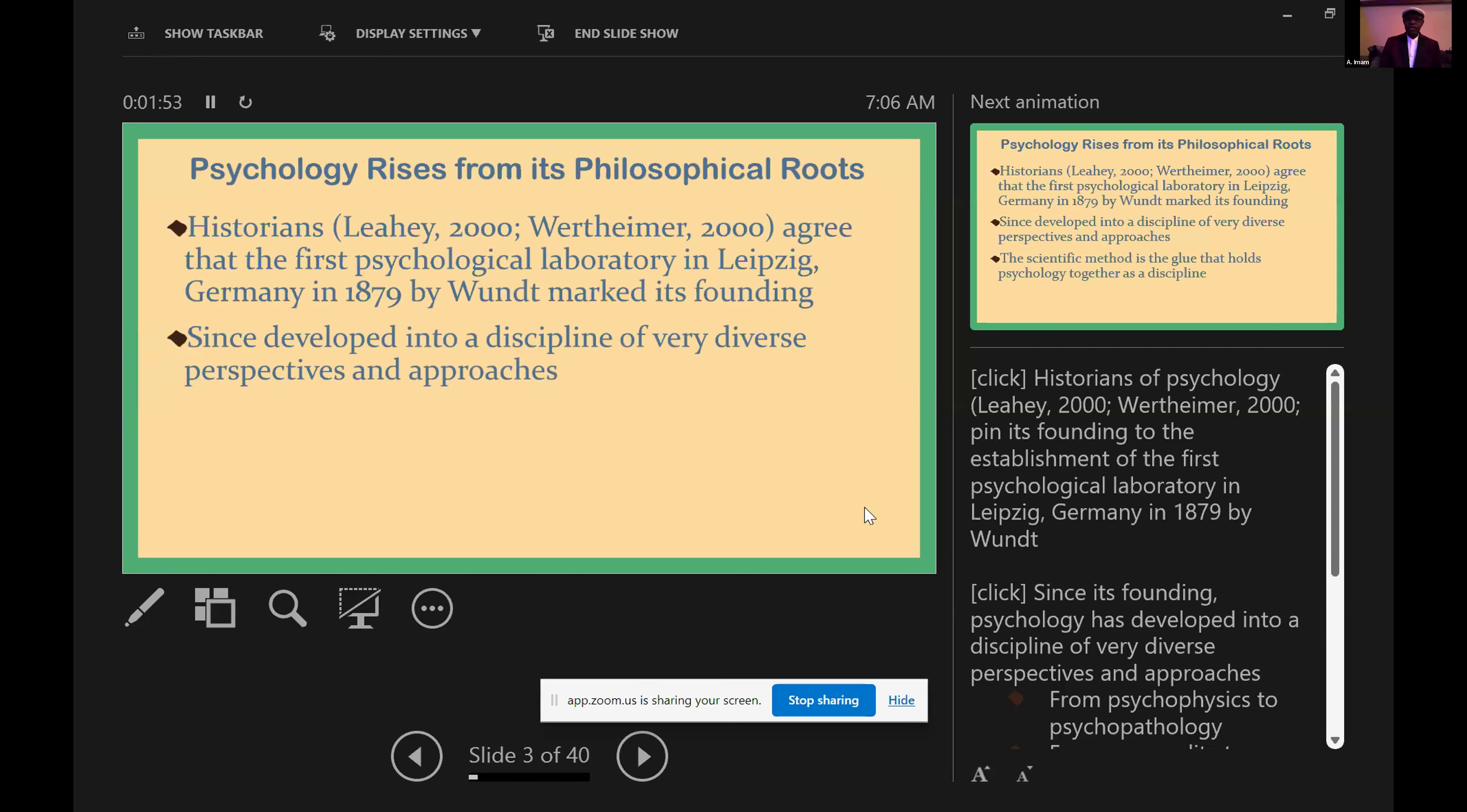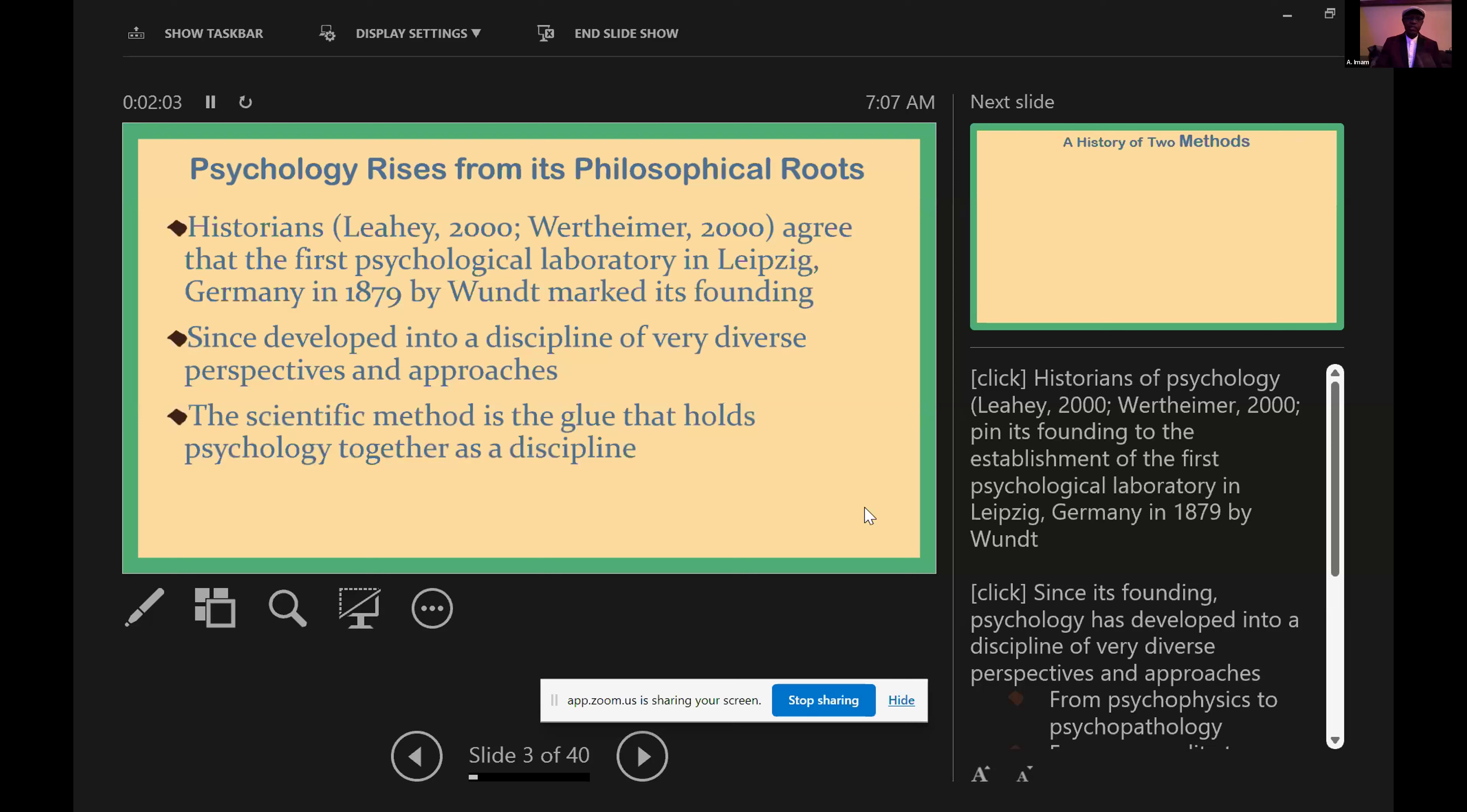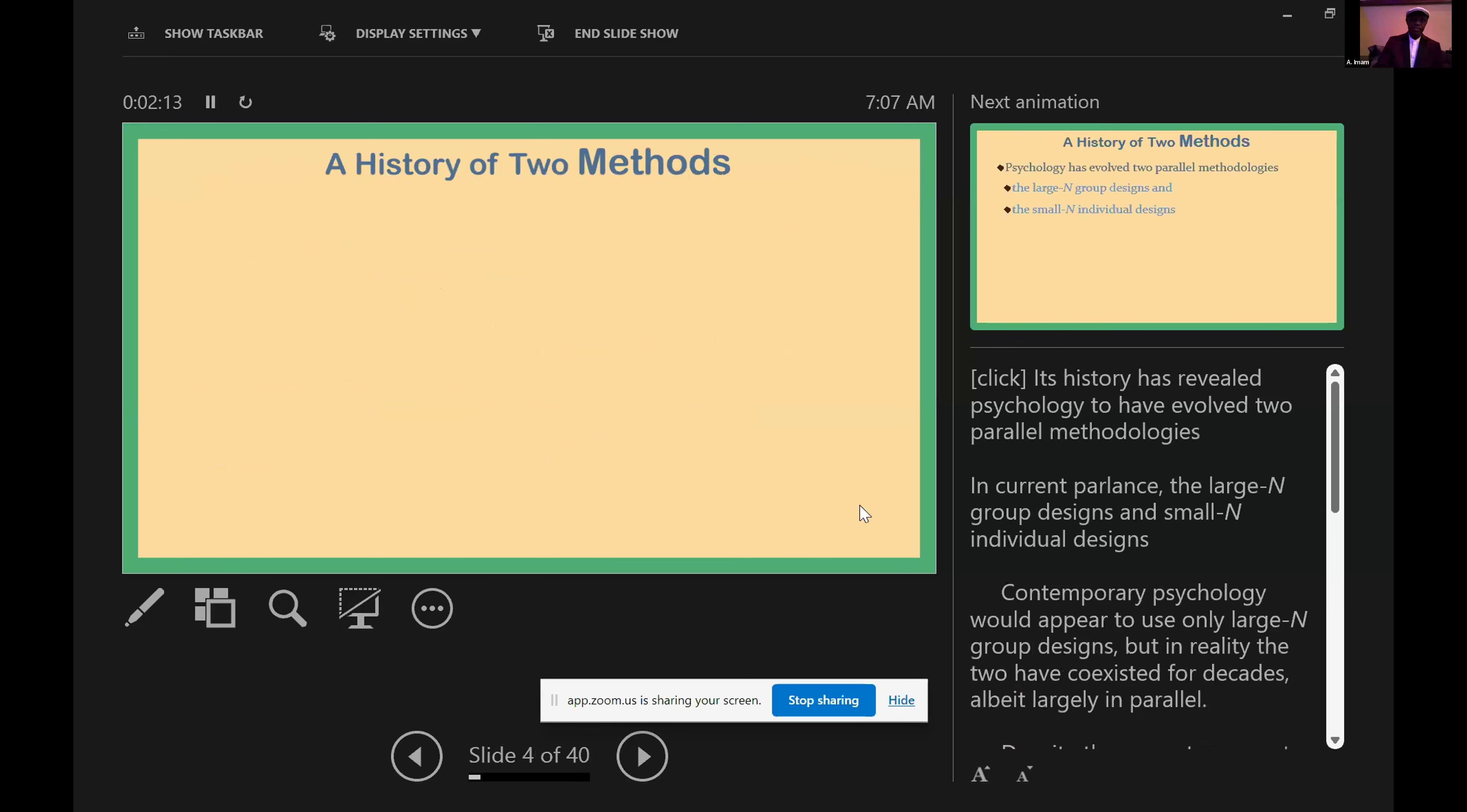Since its founding, psychology has developed into a discipline of very diverse perspectives and approaches. The scientific method, according to introductory textbooks in psychology, is the glue that holds the whole discipline together. Its history has revealed psychology to have evolved two parallel methodologies.